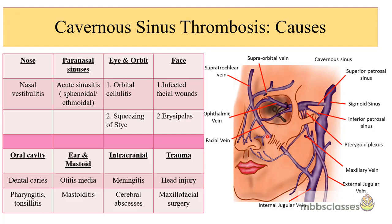The intradural venous sinuses including the cavernous sinus are also valveless. The facial vein is connected with the superior ophthalmic vein directly, and indirectly via the supraorbital vein. So any infection or cellulitis of the nose or facial region can lead to cavernous sinus thrombosis. In the paranasal sinuses, it is seen following acute sinusitis, sphenoidal sinusitis, and ethmoidal sinusitis, through the same route.